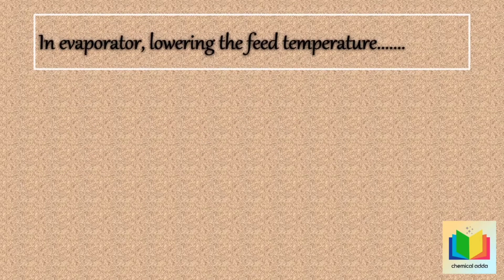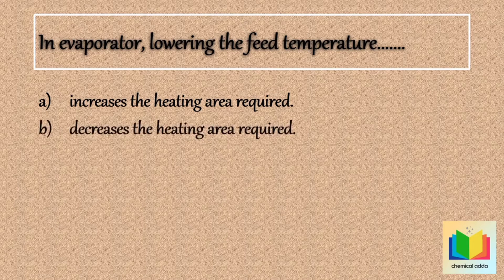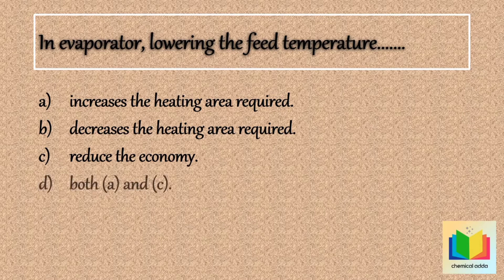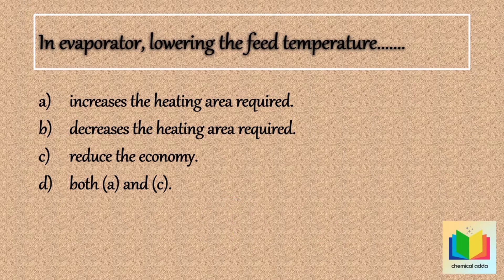In the evaporator, lowering the feed temperature: options are option A, increases the heating area required; option B, decreases the heating area required; option C, reduce the economy; option D, both A and C. So answer is option D, both A and C.